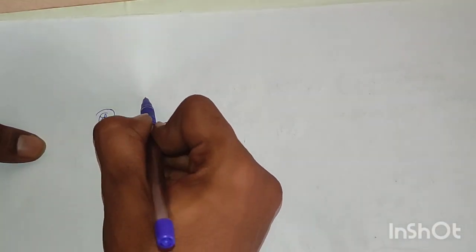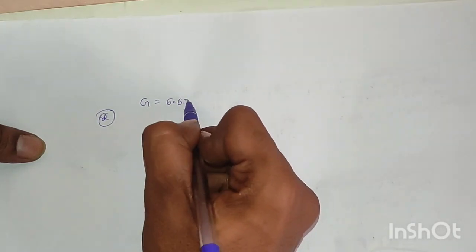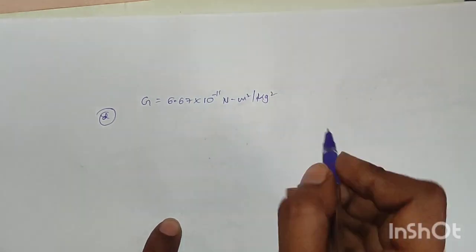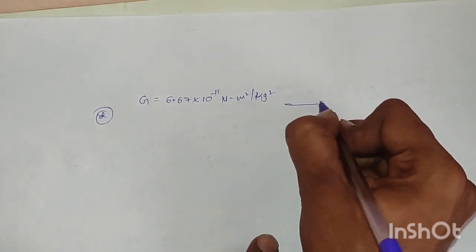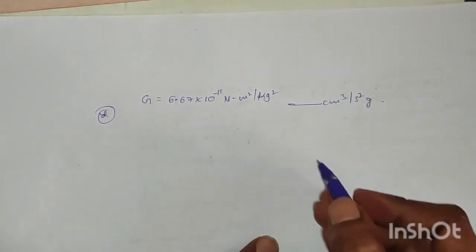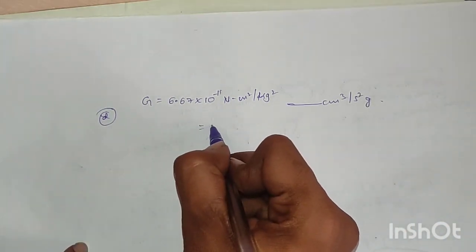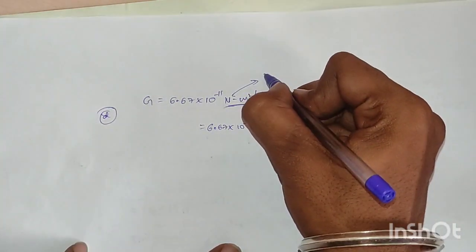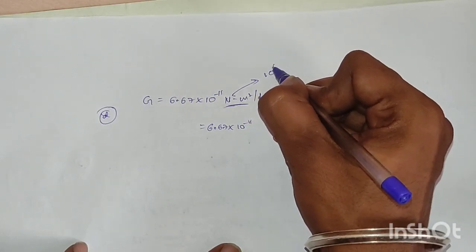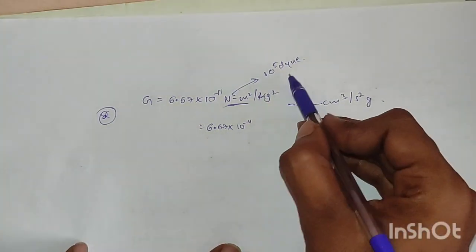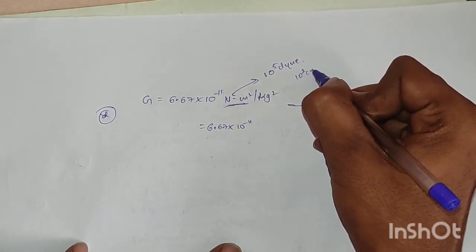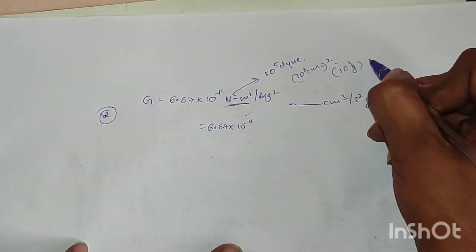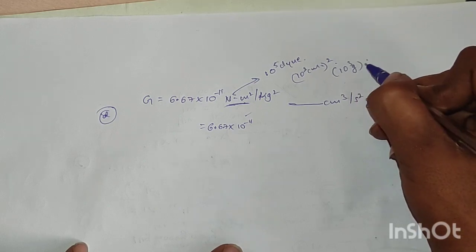Next, question D: the gravitational constant 6.67 into 10 to the power of minus 11 Newton·meter²·per·kg² is to be converted into CGS units — centimeter, gram, second. Here, 1 Newton equals 10 to the power of 5 dynes, 1 meter equals 10 to the power of 2 centimeters, and 1 kg equals 10 to the power of 3 grams.